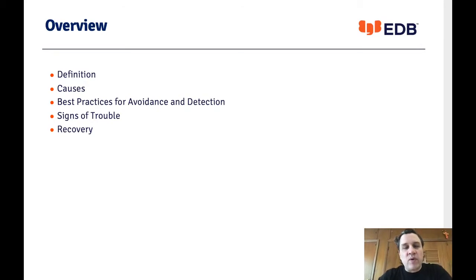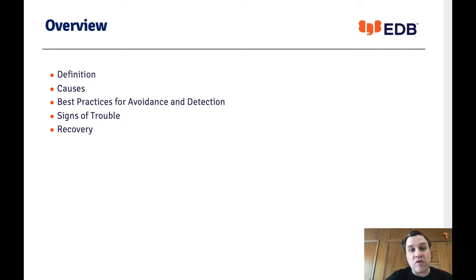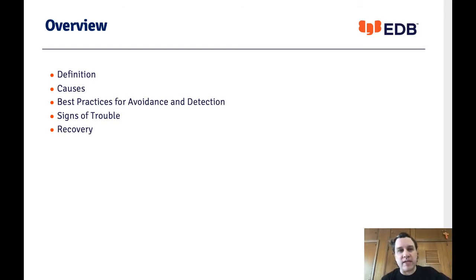Here's an outline of what we're going to cover. I'll start with a definition of corruption, then talk about the three main causes at a high level. I'll discuss best practices for avoidance and detection, then cover some signs that you may have corruption, and finally how you may be able to try to recover your data if you do have corruption.